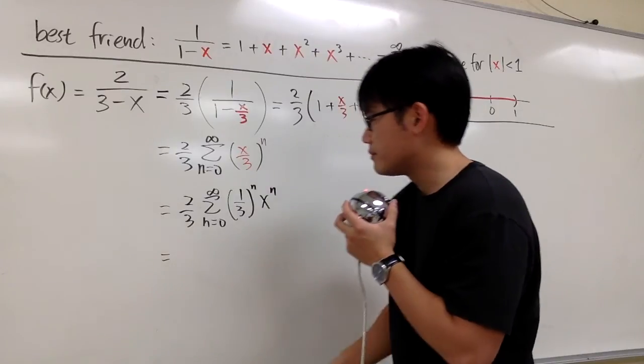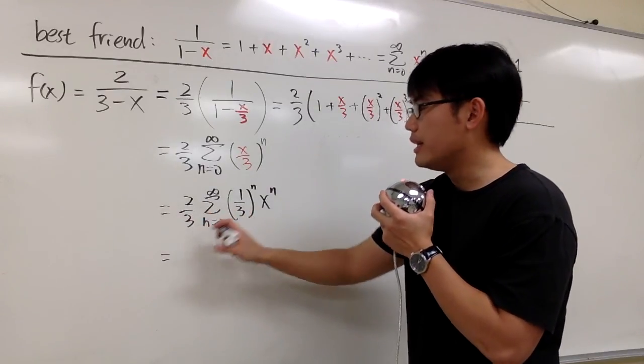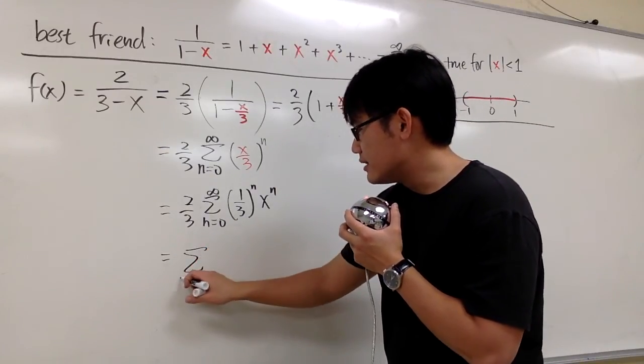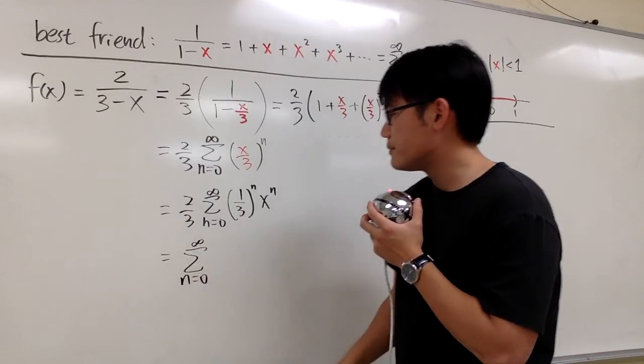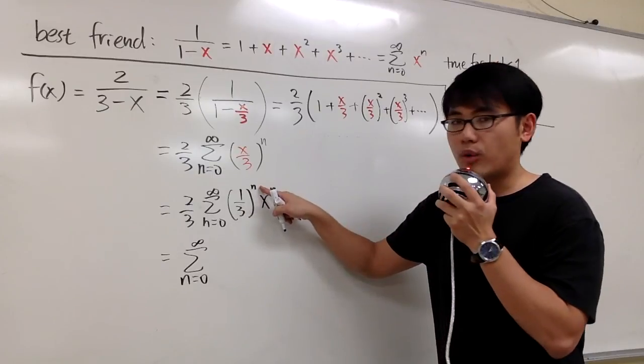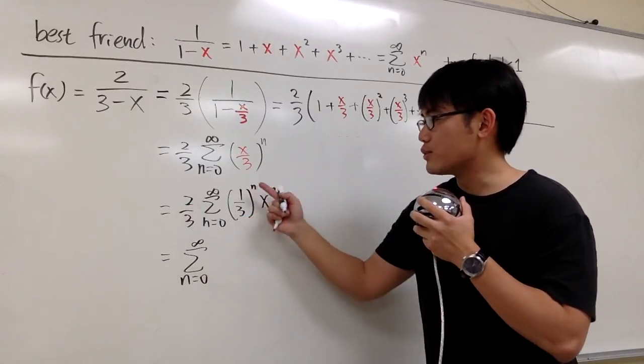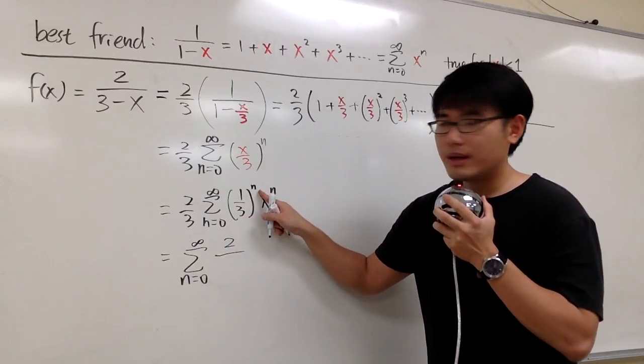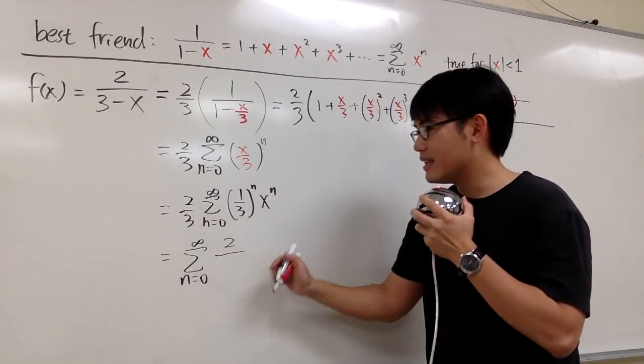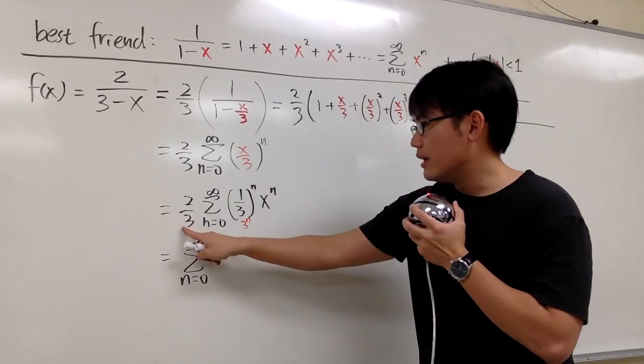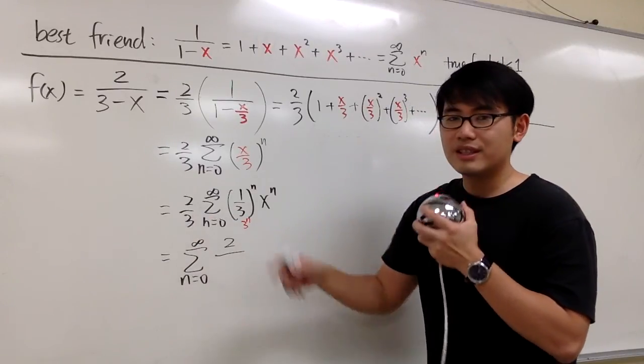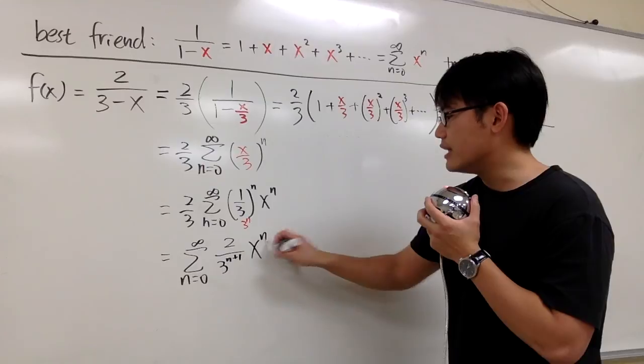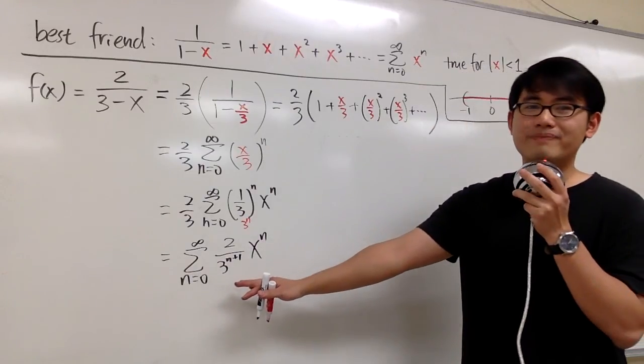And if you would like, we can do slightly more. I can multiply the 2/3 into the sigma notation. This is the same as n equals 0 to infinity. The numerator we have is 1^n, which is always 1 anyways. 2 times 1 is 2. On the bottom, we have 3^n, and then we have one more 3 that's going to be multiplied inside. So this is 3^n on the bottom, multiply with 3^1. We add the exponents, so we have 3^(n+1) exponent. And then x^n on the side. And now this is the form. That's all.